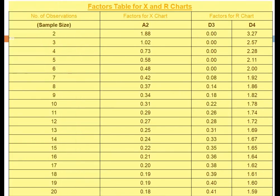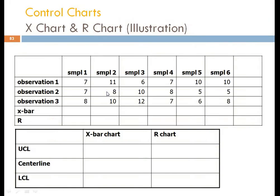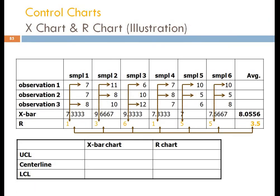Now we calculate R bar, where R is the range — the difference between the highest and lowest value in each sample. For sample 1: 8 − 7 = 1. For sample 2: 11 − 8 = 3. For sample 3: 12 − 6 = 6. And so on, giving R values of 1, 3, 6, 1, 5, 5. R bar = (1+3+6+1+5+5)/6 = 3.5.